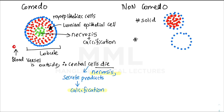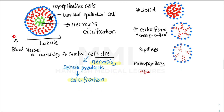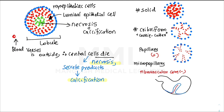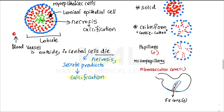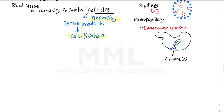Non-comedo types include solid, cribriform (cookie-cutter appearance), papillary, and micropapillary patterns. The main difference between papillary and micropapillary is the presence or absence of a fibrovascular core. A papilla is a finger-like projection into the lumen. Comedo-type, characterized by central necrosis, is the major type of DCIS.